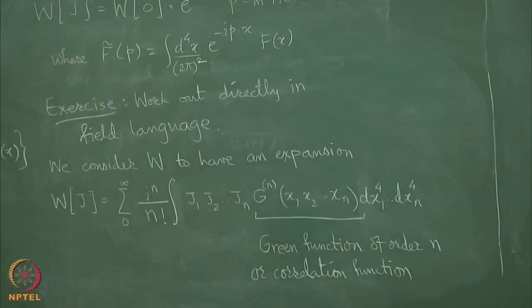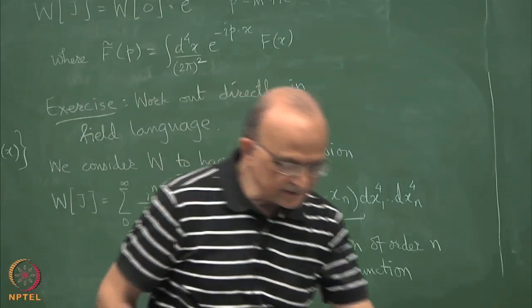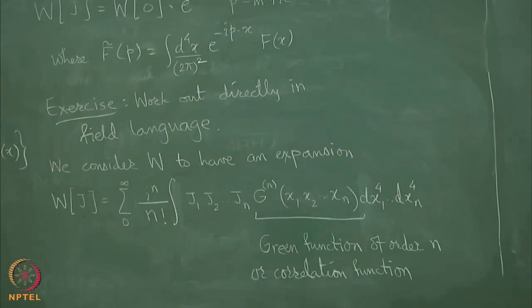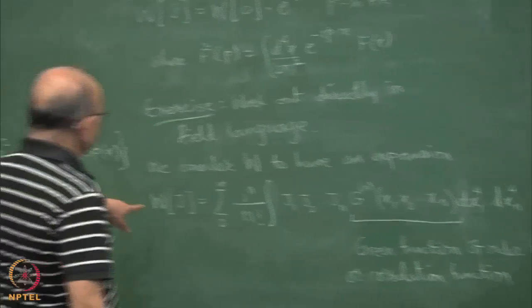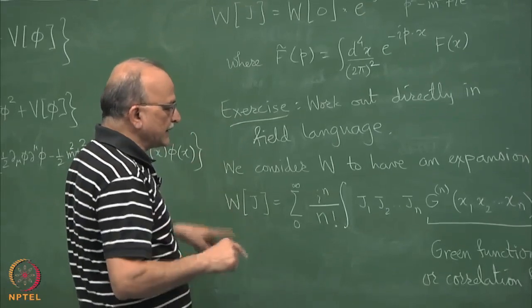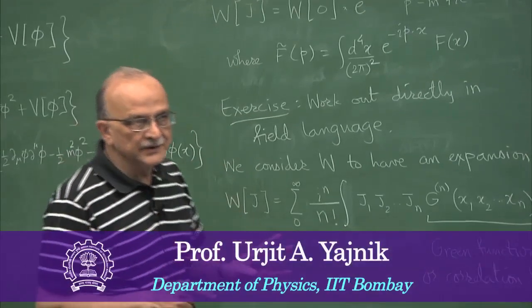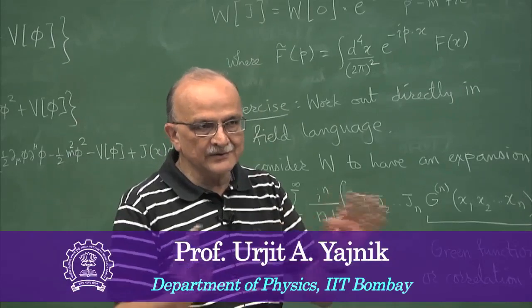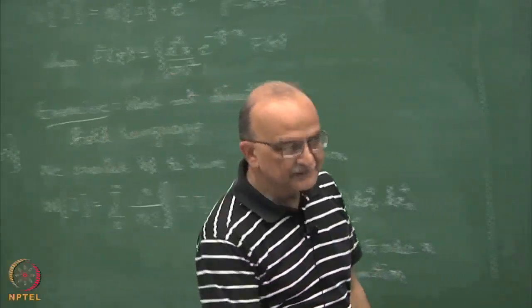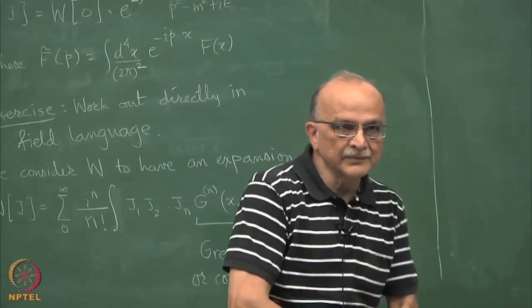We will see next time that this correlation function is a bit of an overkill and can also have redundant pieces in it. But if you take log of this w, like that z that was defined, then you get really the connected pieces. Right now this would not make sense, but let me just stop at that. We will stop with this.